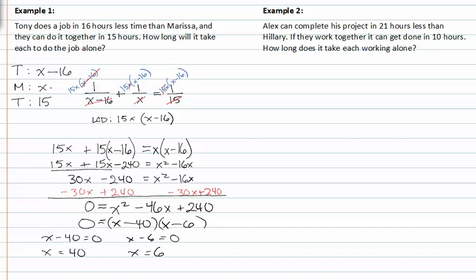If I plug in forty for Marissa, that allows me to find Tony's time, and it makes perfect sense. However, if I plug in six, Marissa's time would be six, but when I use it in Tony's work situation and subtract sixteen, I'd get negative ten — so that solution will not work. Therefore, Marissa does a job in forty hours and Tony does a job in forty minus sixteen, or twenty-four hours.